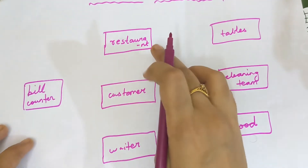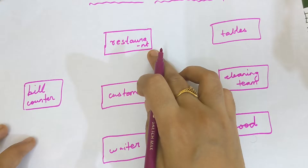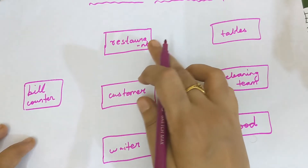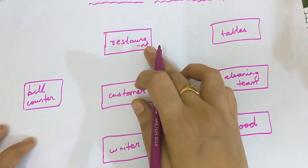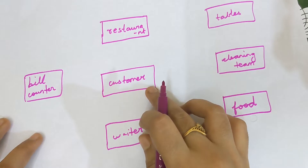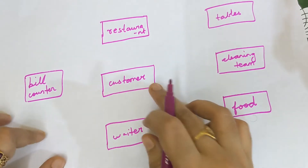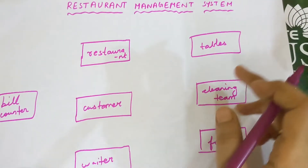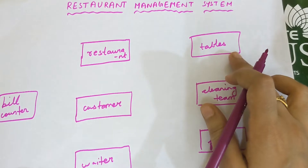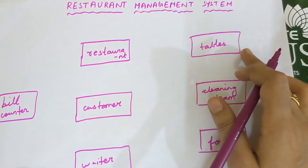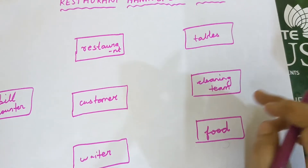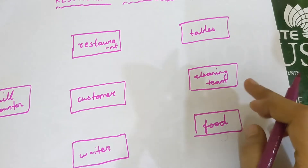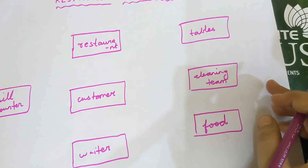Restaurant is an entity because restaurant is a building — you are able to touch it physically, therefore it is an object which physically exists. Customer is a person; you can physically touch the customer, therefore it is an entity. Waiter is also a person; you can physically touch the waiter, therefore waiter is an entity. Table is an object — it is physically present, you are able to see and touch the table, therefore table is an entity. Cleaning team consists of a group of people, so every person is physically existing, therefore it is an entity.